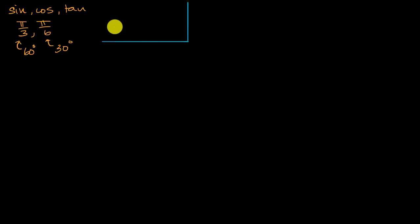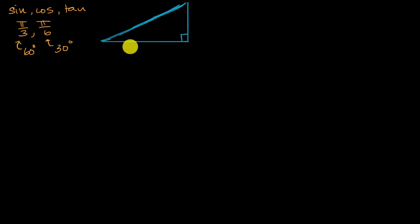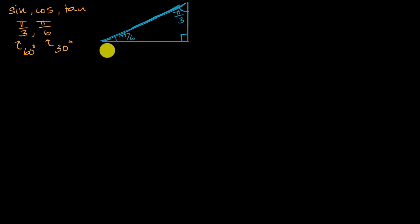So let me draw a triangle here. This right over here is a right angle. Let's say that this angle is pi over three radians, which is the same thing as 60 degrees. And this one over here is pi over six radians, which is the same thing as 30 degrees. The longest side — the hypotenuse — has length one.